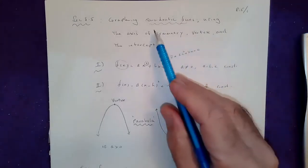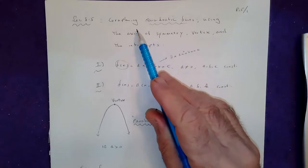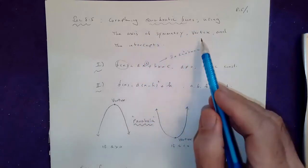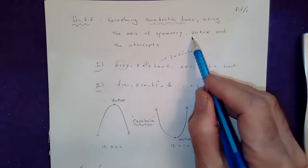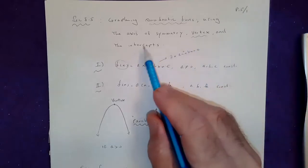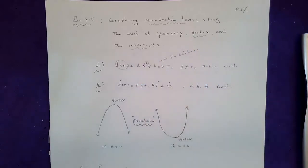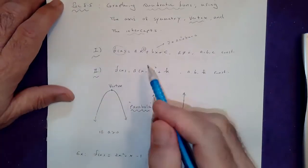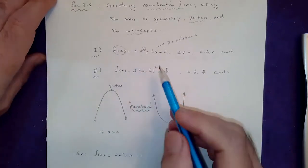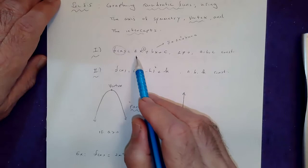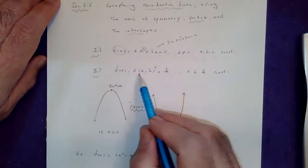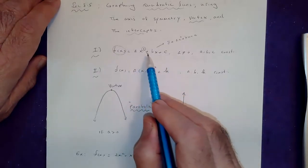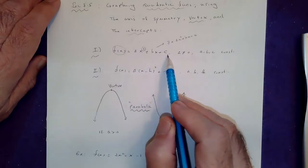We will be graphing these functions — drawing their pictures using the axis of symmetry, something called the vertex, and the intercepts. Quadratic functions show up in two forms. The general form is the standard form: ax squared plus bx plus c.